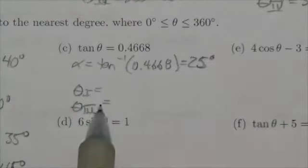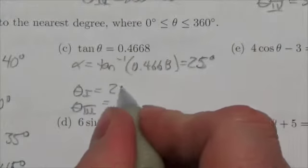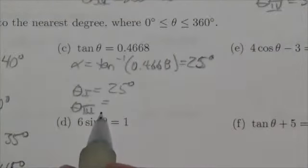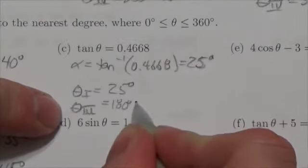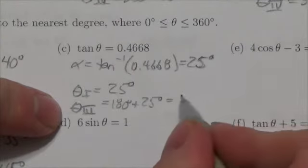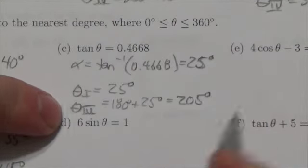Now, a reference angle of 25 degrees in the first quadrant is just going to be that, 25 degrees. But 25 degrees in the third quadrant is going to be 180 degrees plus 25, which puts us at 205 degrees.